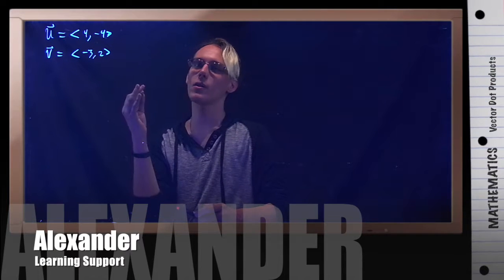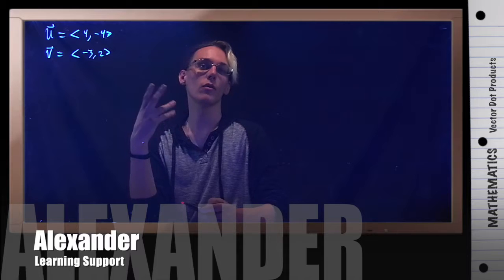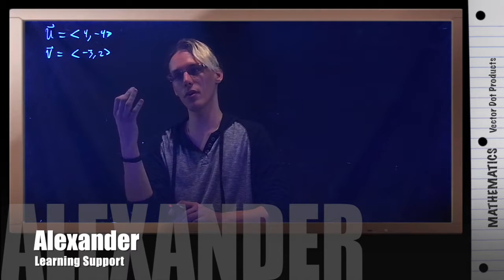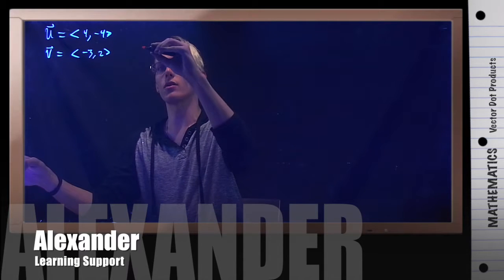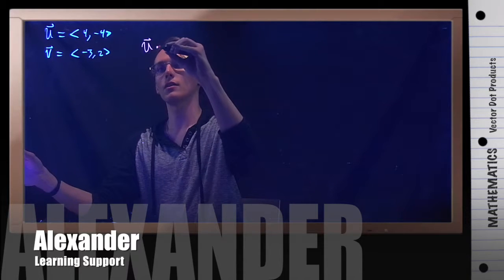In this example, we are given the following two vectors u and v, where u is 4, negative 4, and v is negative 3, 2. And we are simply asked to compute the dot product, u dot v.